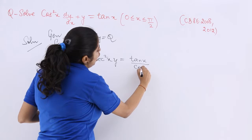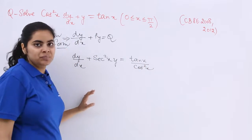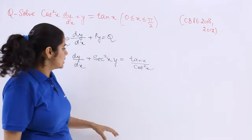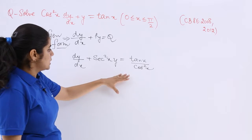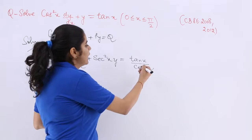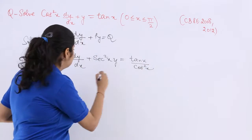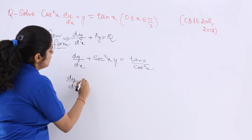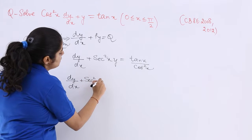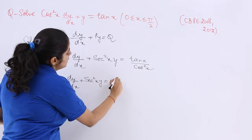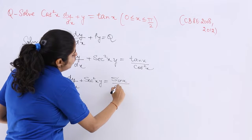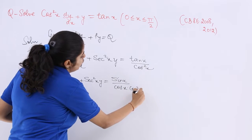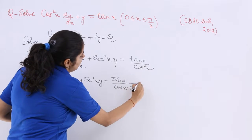After dividing, it becomes dy/dx + (1/cos²x)y = tan x / cos²x, which is sec²x · y on the left. Now, tan x is sin x / cos x, so tan x / cos²x is sin x / cos³x. We can write the next step as dy/dx + sec²x · y = sin x / cos x · (1/cos²x).